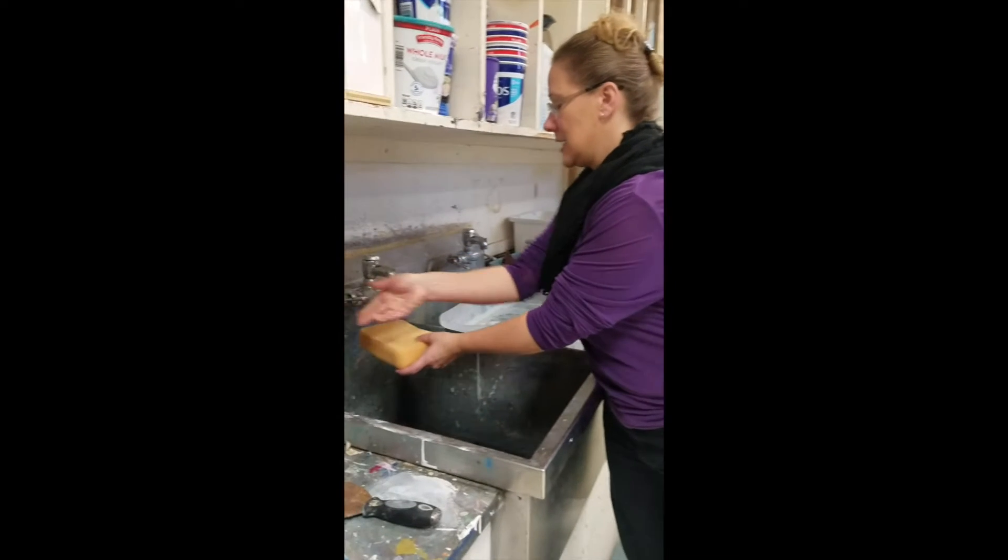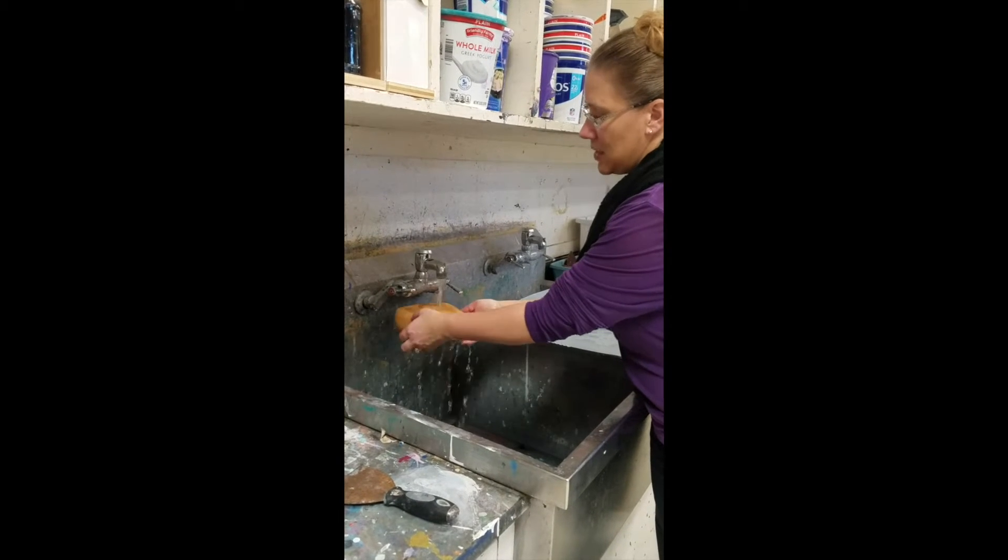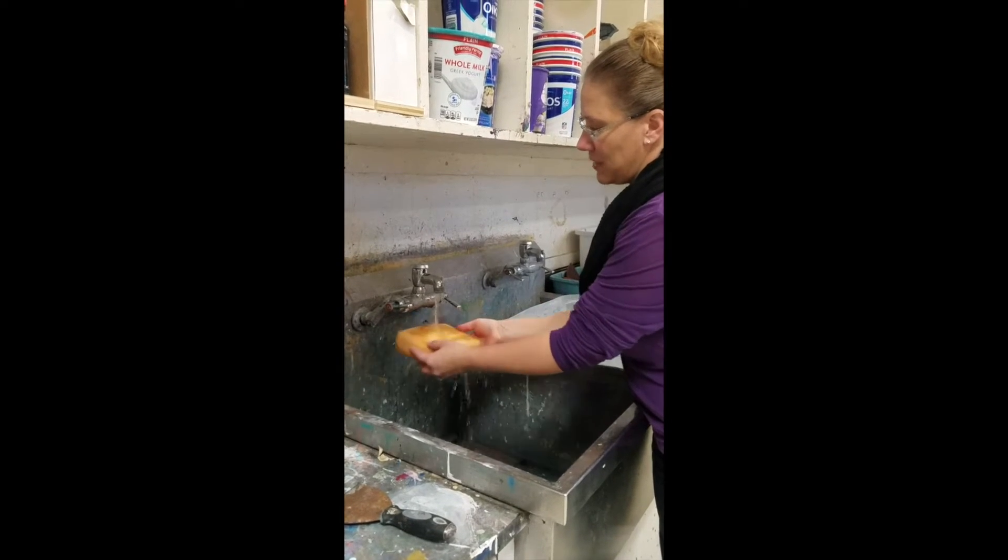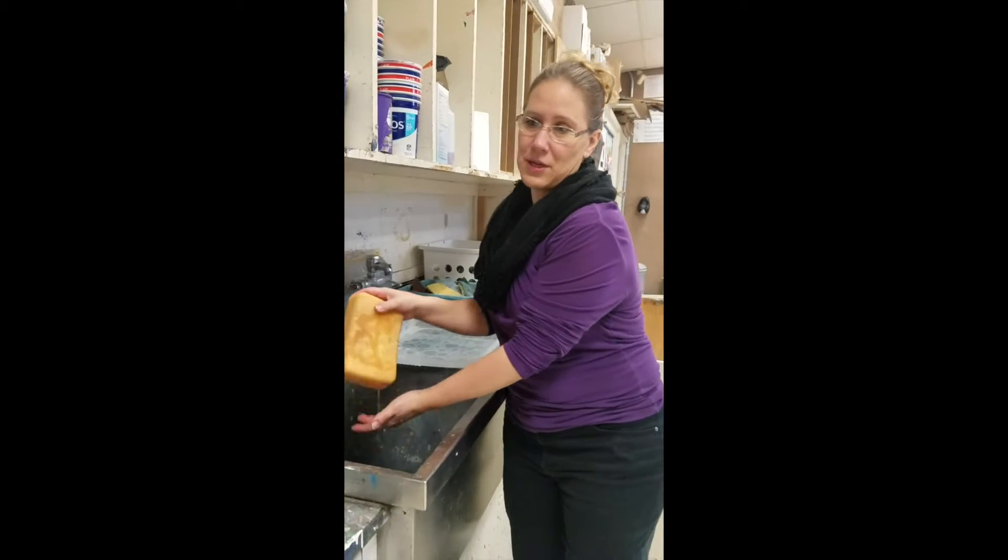This is a demo on how to stretch watercolor paper. The first thing we're going to do is get some water on a sponge and take the tape from the last painting off of the board. I'm going to take my wet sponge over to where my board is.